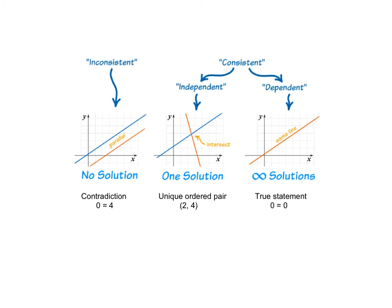So to summarize, if we have an inconsistent system of equations, our graph looks like two parallel lines. That means we have the same slope, but different y-intercepts. We have no solutions, and when we solve it algebraically, we get a contradiction, so a number equals a different number.